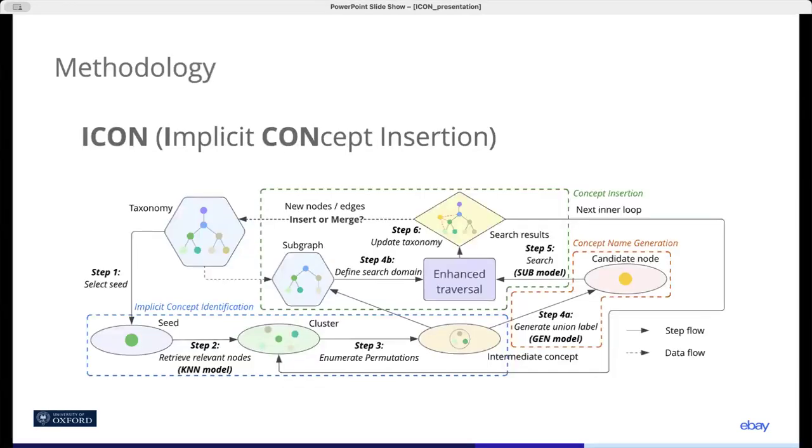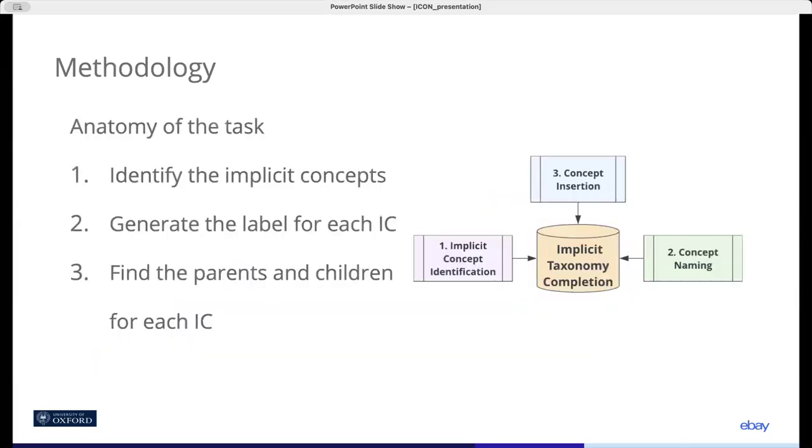ICON is the solution we designed to this problem. Here's the diagram of how it works. It's basically an integration of three modules, each corresponding to a subtask that is part of implicit concept completion. We implement each module by fine-tuning pre-trained language models.